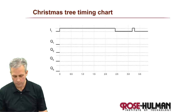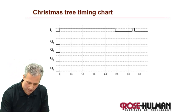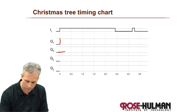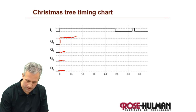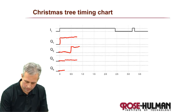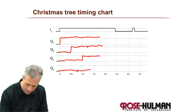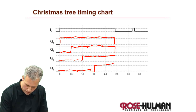Working through the timing chart: as soon as the input comes on, Q1 comes on right away. The others stay off. After half a second, Q2 joins. After another half second, Q3 joins. After that, Q4 comes on. They all stay on until the system turns off, at which point they all shut off together.